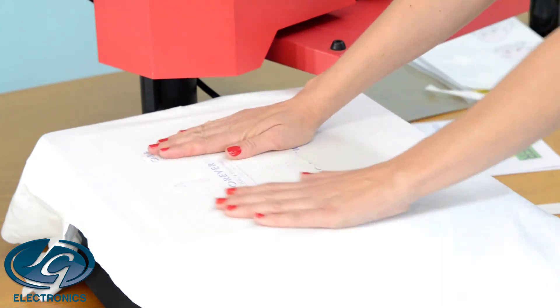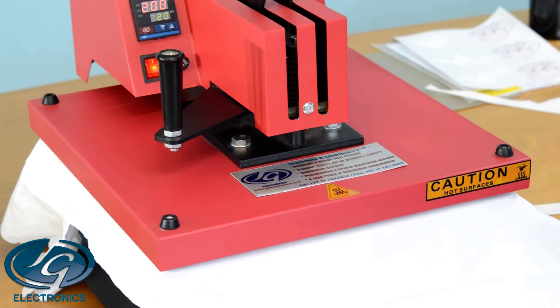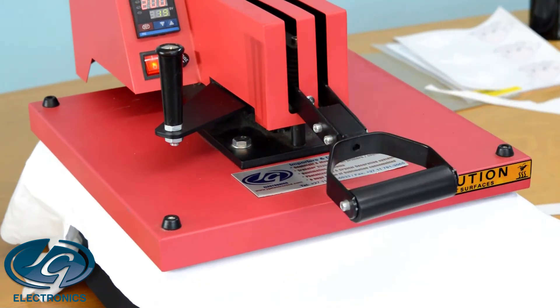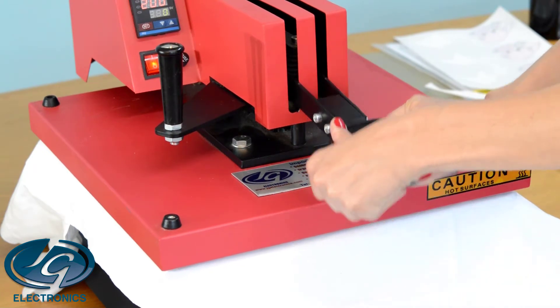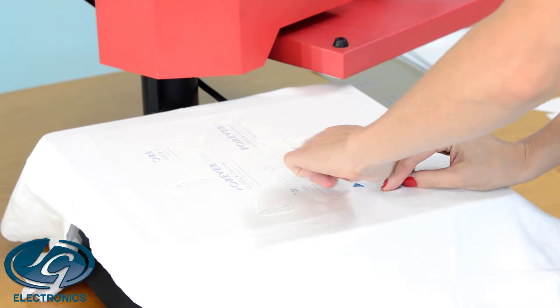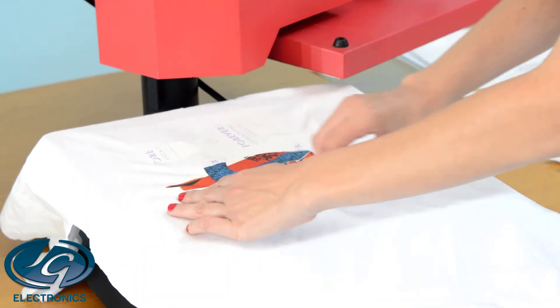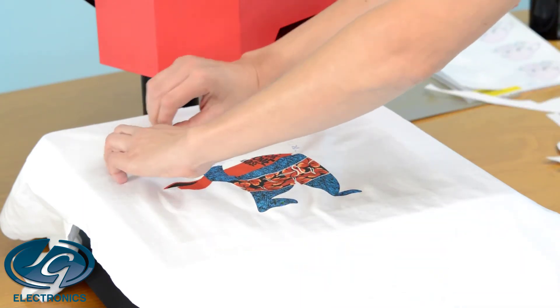Press it for heavy pressure, 20 seconds, 200 degrees. When time is up, remove it immediately. Work very quickly before it gets cold.